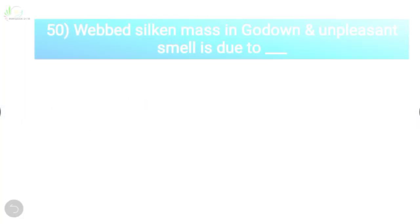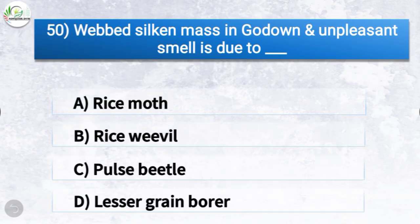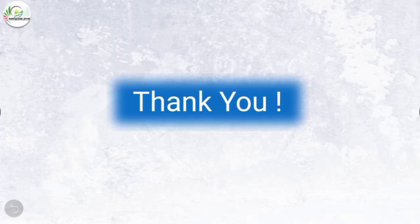Question number fifty: webbed silken mass in godown and unpleasant smell is due to which pest? The options are rice moth, rice weevil, pulse beetle, or lesser grain borer. The correct answer is option A, rice moth. So webbed silken mass in godown and unpleasant smell is due to rice moth. That was all — thank you friends for watching our video. Hope you find it useful. Please subscribe to our YouTube channel for more such videos. Thank you.